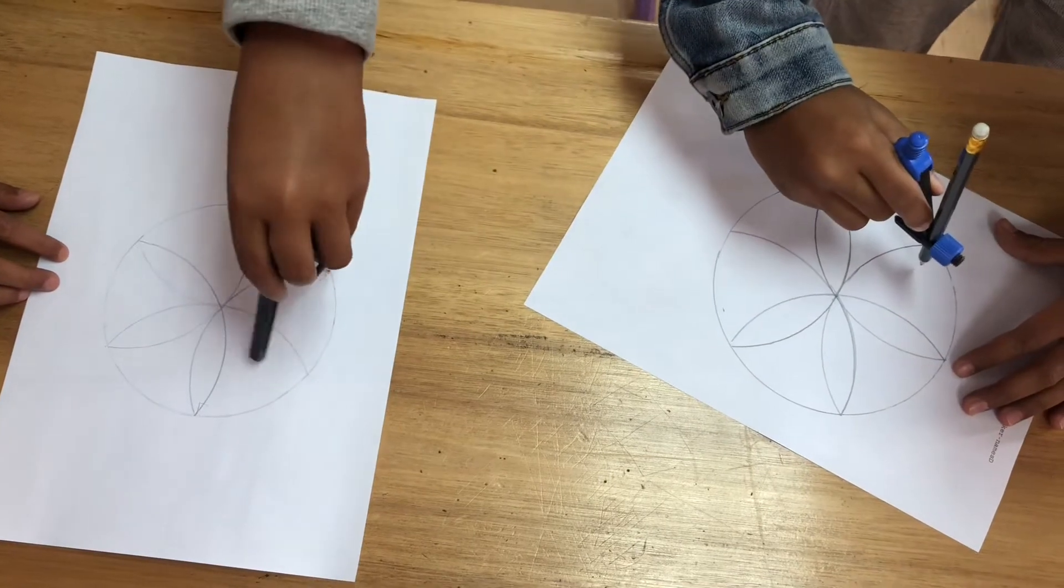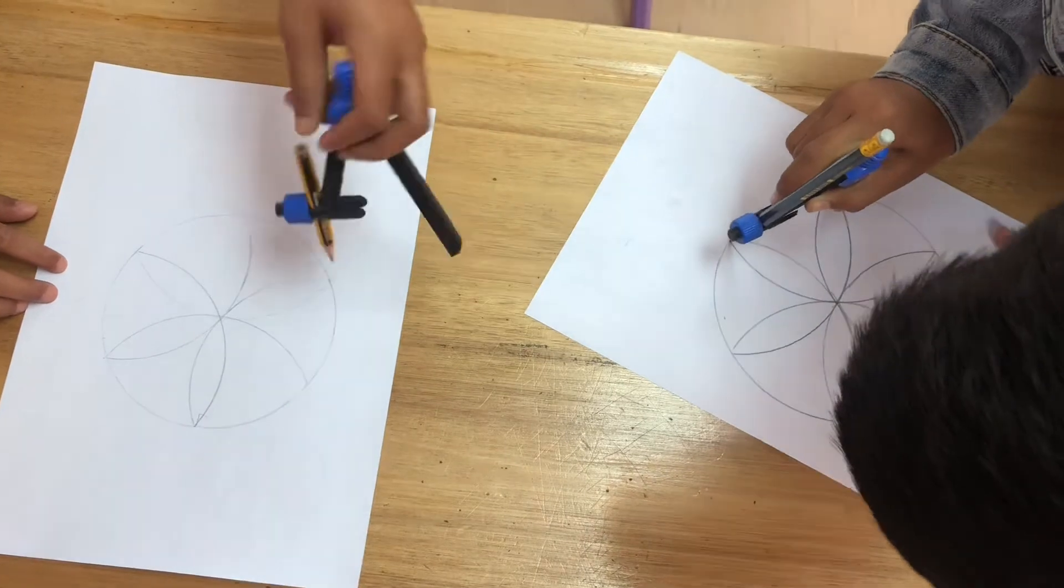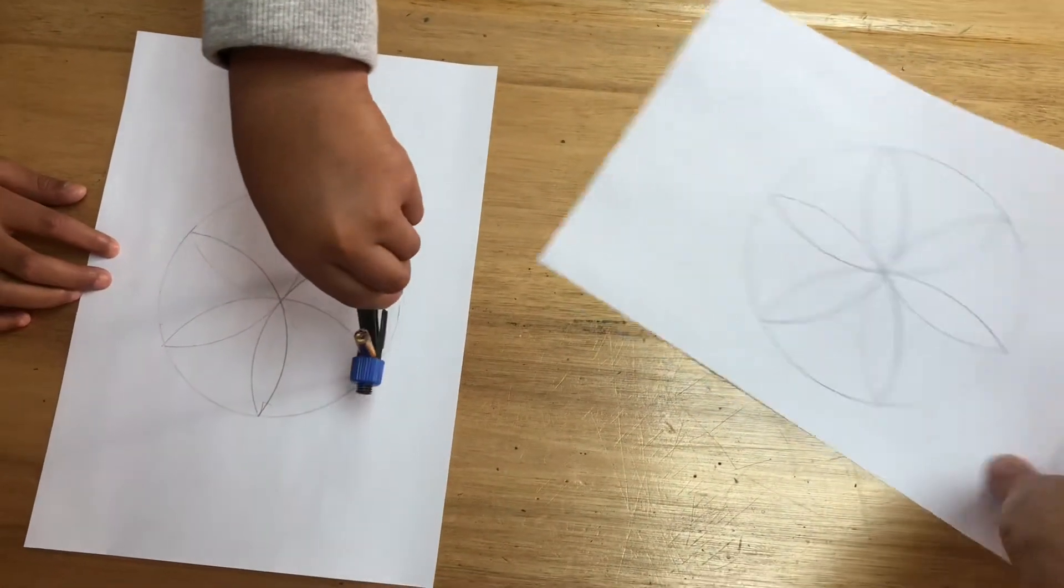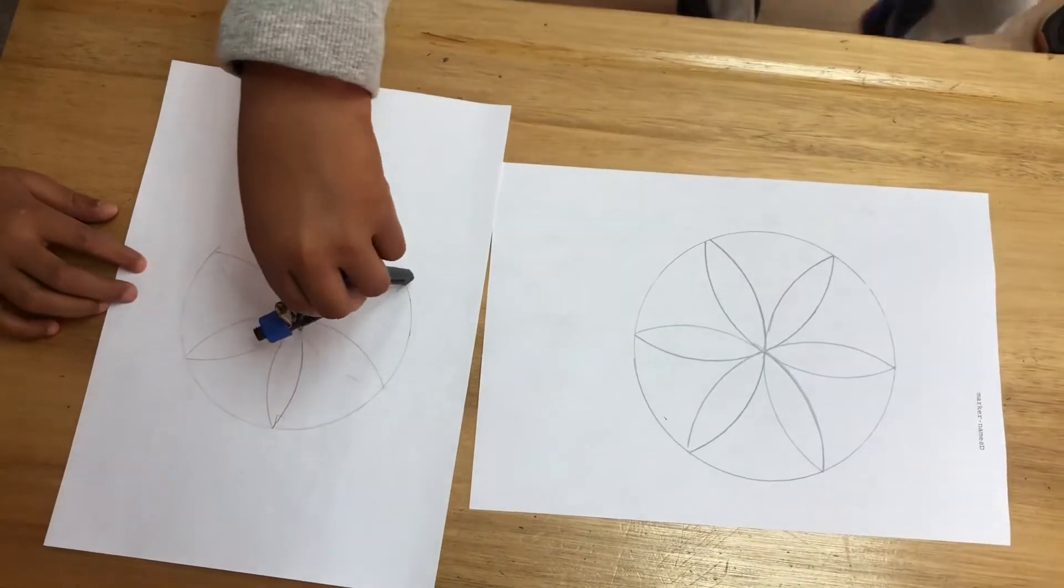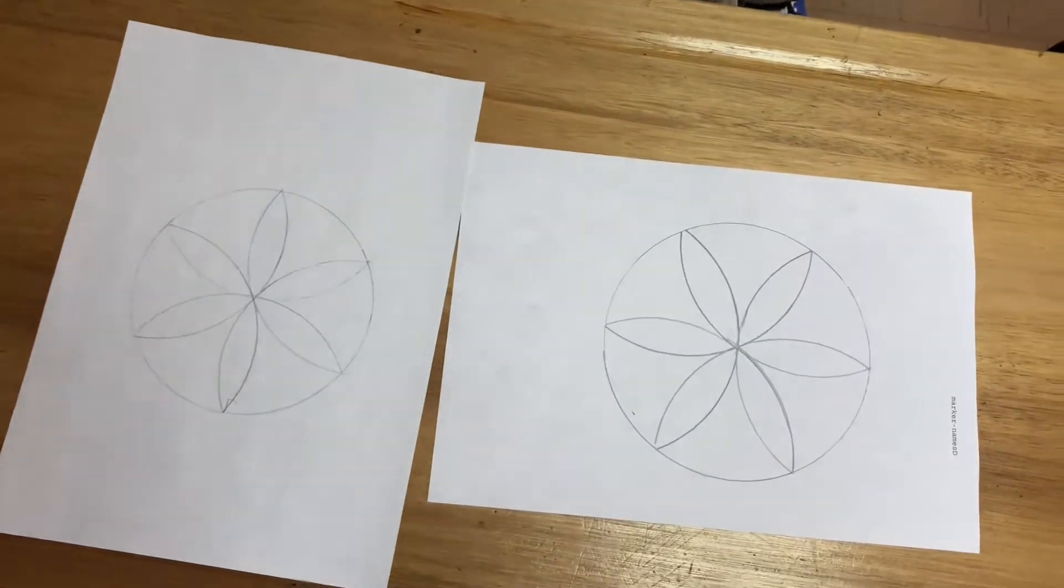Okay. So one more petal to complete there. So here we go. There we go. So there's our geometric shape, a floral design. You've got symmetry, you've got reflection, you've got rotation. Wonderful.